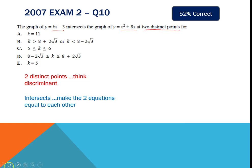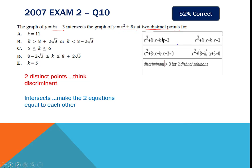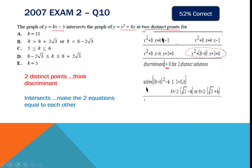Intersecting means the two equations are actually equal. On your calculator, solve x squared plus 8x equals kx minus 3, which brings you to a quadratic format. Then apply the discriminant rule: the discriminant has to be greater than zero for two distinct solutions. Your b value is 8 minus k, a value is 1, and c value is 3. Solving when the discriminant is greater than 0 gives you two answers from your calculator.